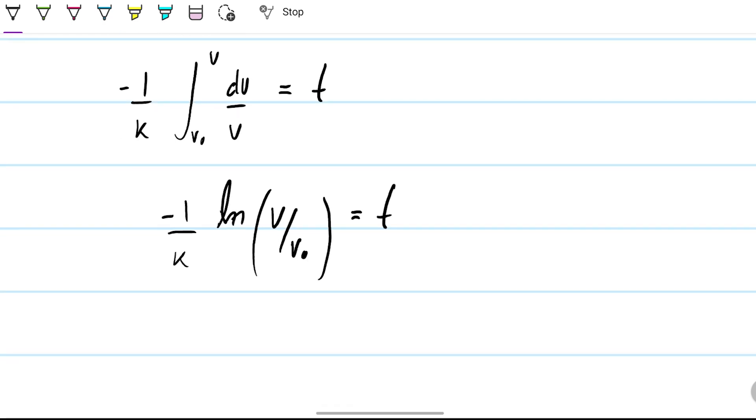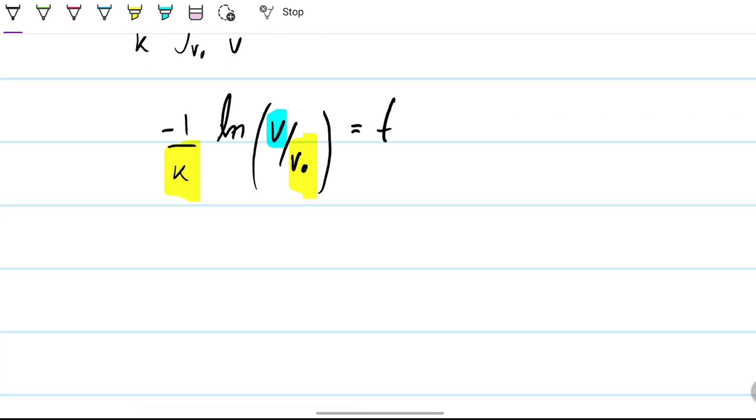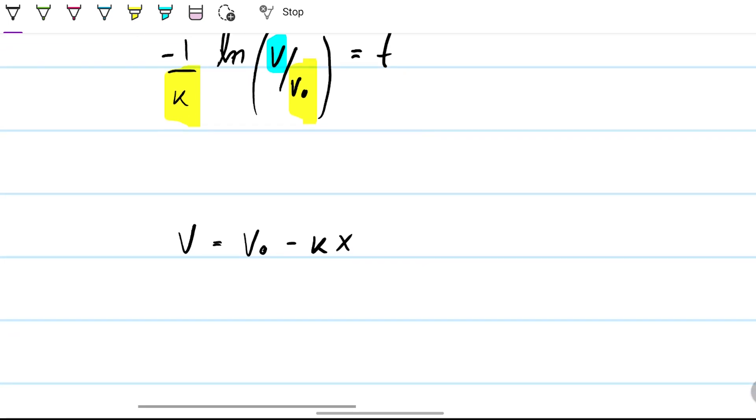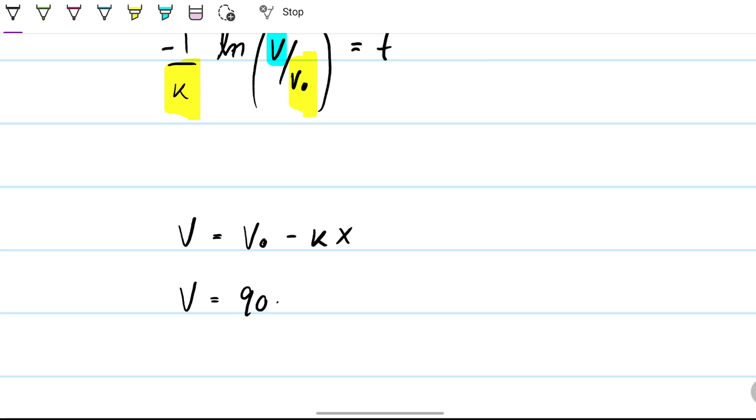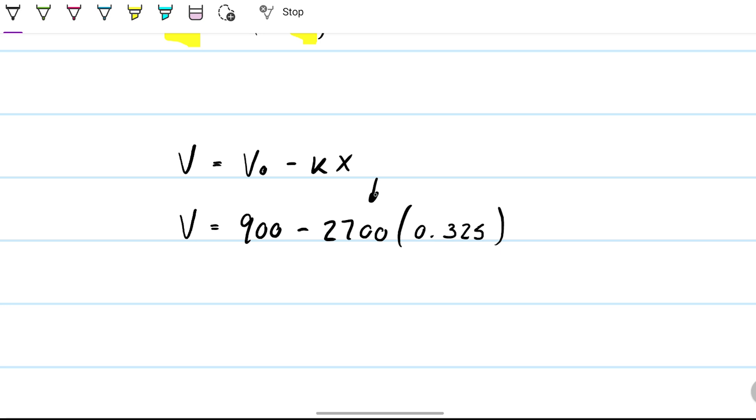What is that? That's the velocity when the position is 0.325. But we've always known a relationship between the position and the velocity - this is it. So therefore, if I want to know what is the velocity, it's going to be 900 minus 2700 times 0.325. This is meters, so it's going to be meters per second. The velocity turns out to be 22.5.